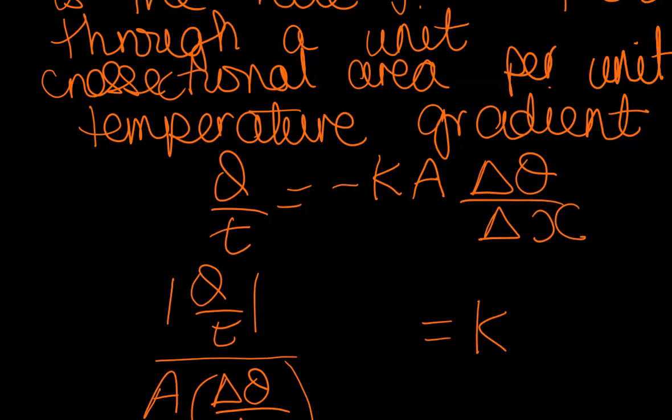Now Q over t tells you Q is energy, so it is the rate at which heat is flowing. Then you have K representing your thermal conductivity, A represents the cross-sectional area, and delta theta over delta x represents the temperature gradient.